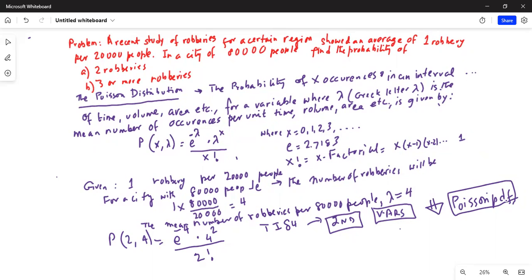My lambda value is 4, and I am looking for 2 robberies. So X is 2. Lambda is 4, X value is 2. And then I paste. Put the cursor on paste. And hit enter and enter. Whenever you are on paste, you have to hit enter and enter twice.